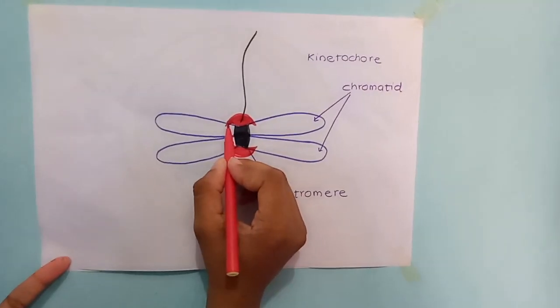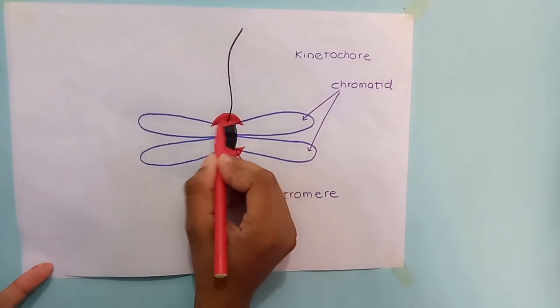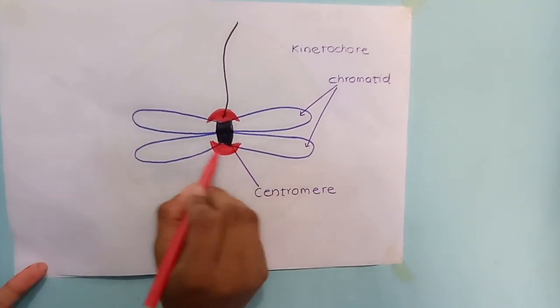What is the kinetochore? Kinetochore is a special type of protein structure located at the centromere.